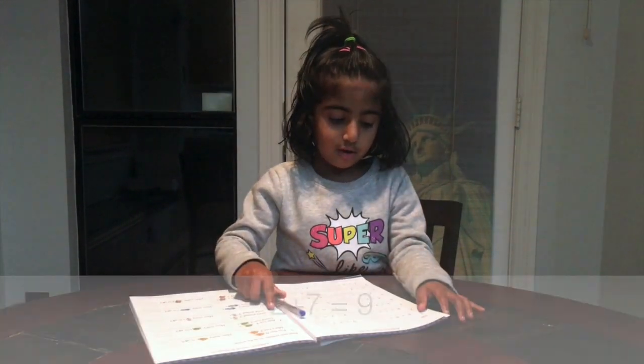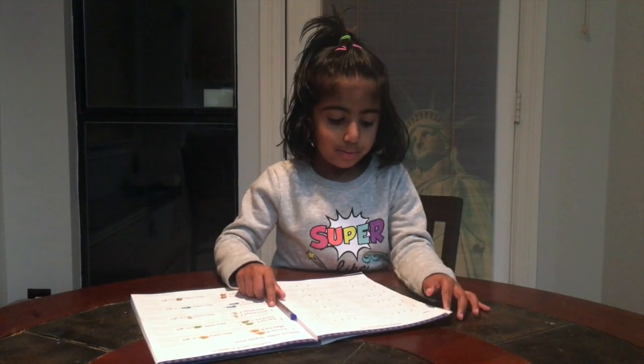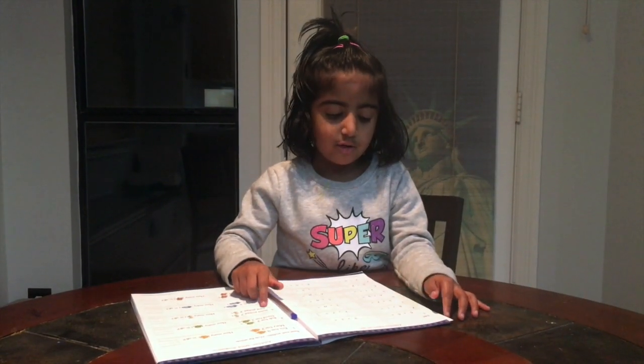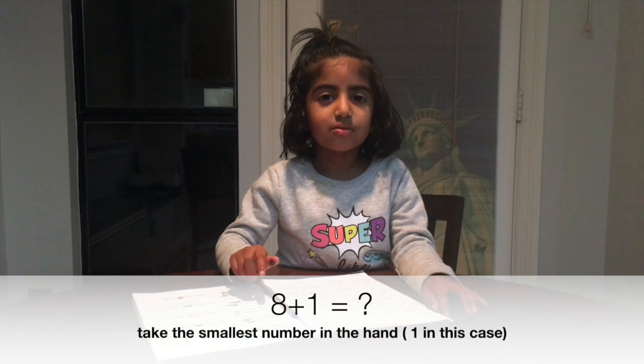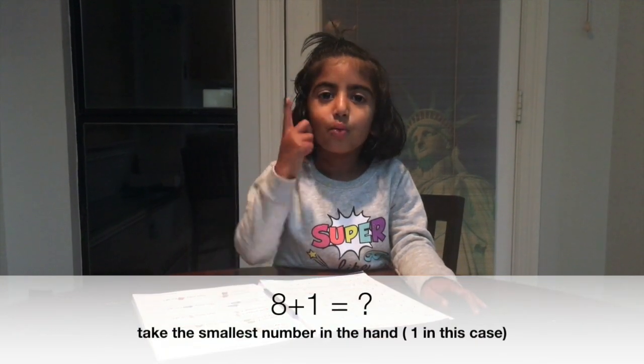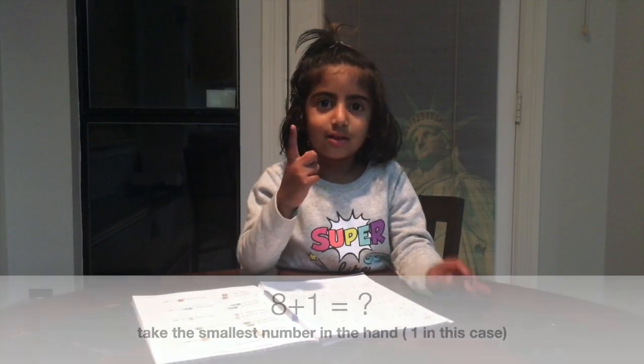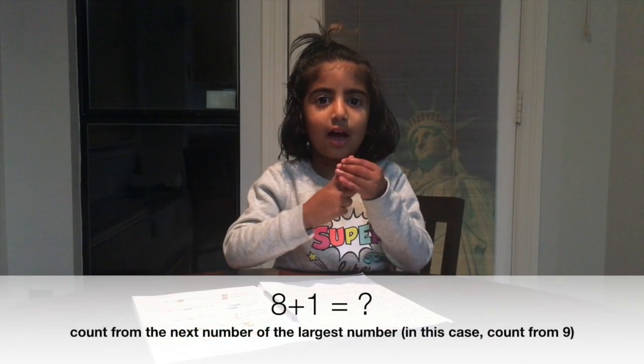Now 8 plus 1. Which one is the smallest number? 1. Now count: 9.